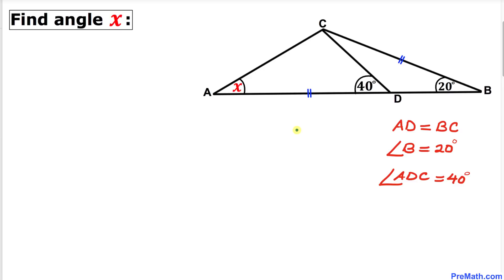Welcome to pre-math. In this video tutorial we have a compound shape that consists of multiple triangles, such that side AD equals side BC, angle B is 20 degrees, and angle ADC is 40 degrees. We are going to calculate angle X.